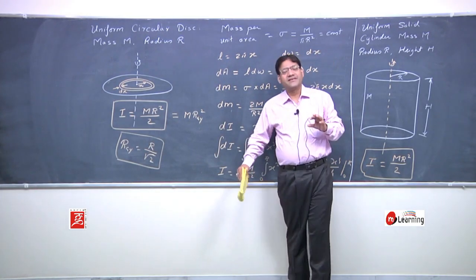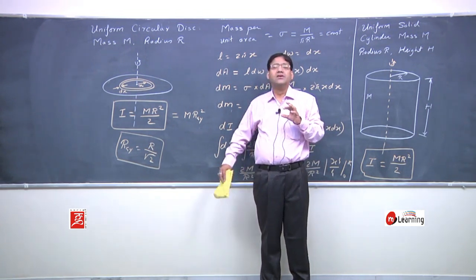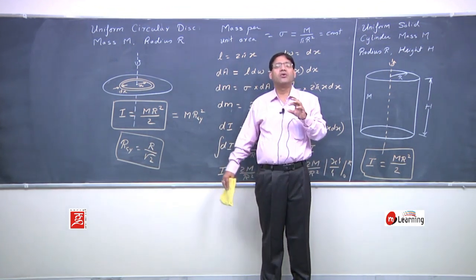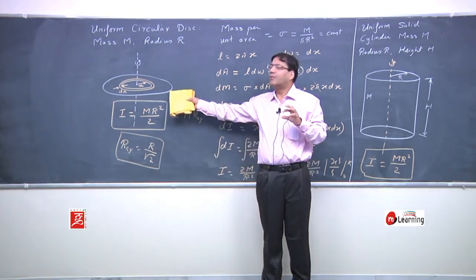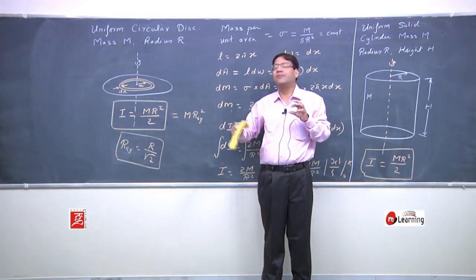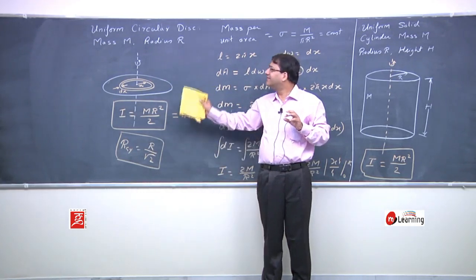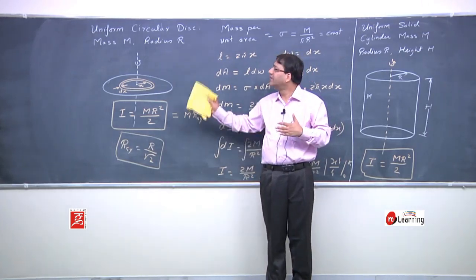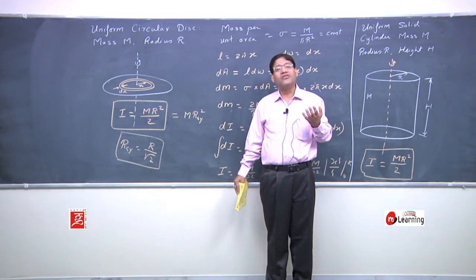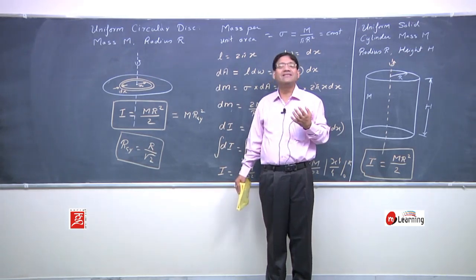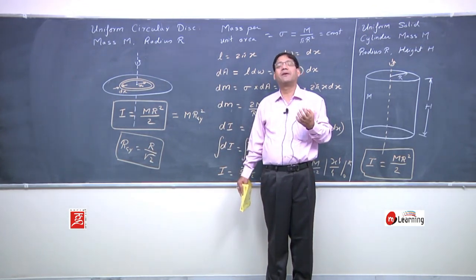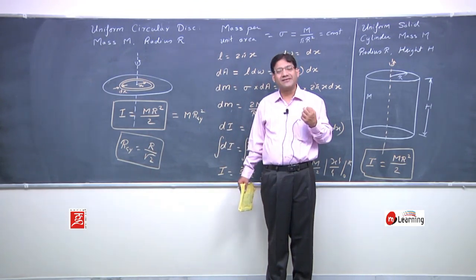The moment of inertia of regular bodies when they are rotated about a regular axis — this is a regular body on a regular axis — we write the moment of inertia. When the same body is rotated about some irregular or random axis, what will the moment of inertia be? We will deal with that when we cover the Parallel Axis Theorem and Perpendicular Axis Theorem. These are the two theories.